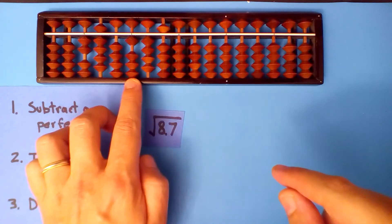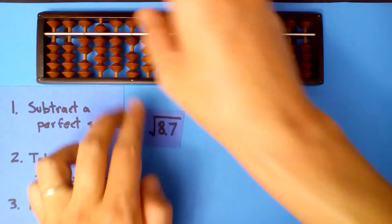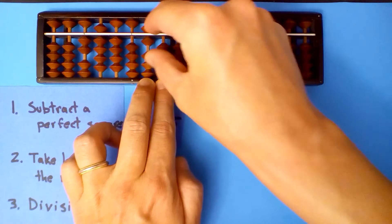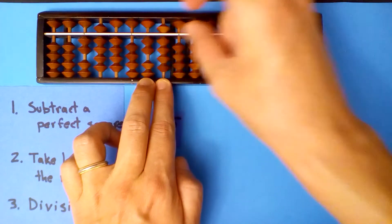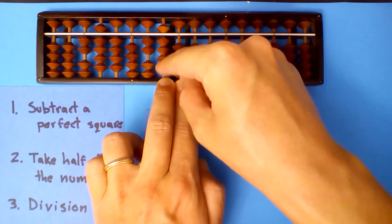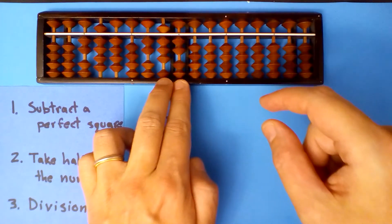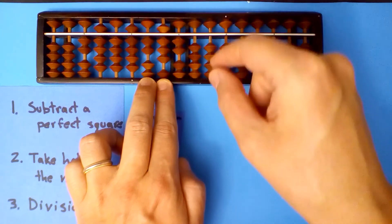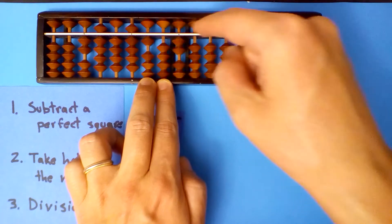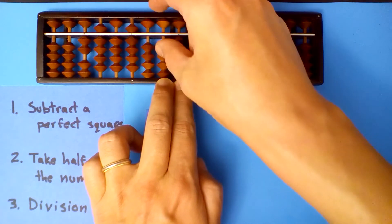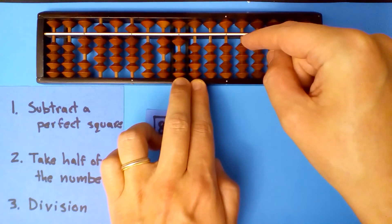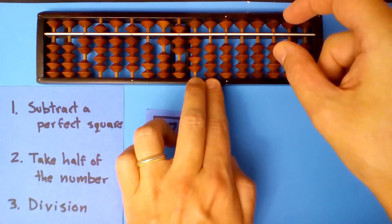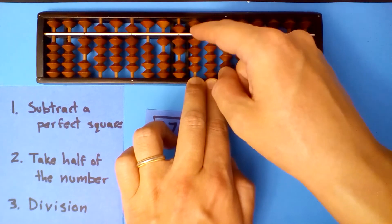2.9 into 14, 4 times. 4 times 2 is 8, 4 times 9 is 36, 4 times itself is 16 — we'll subtract 8. 2.9 into 28, 9 times. 9 times 2 is 18, 9 times 9 is 81, 9 times 4 is 36, 9 times itself is 81. We subtract 40.5.